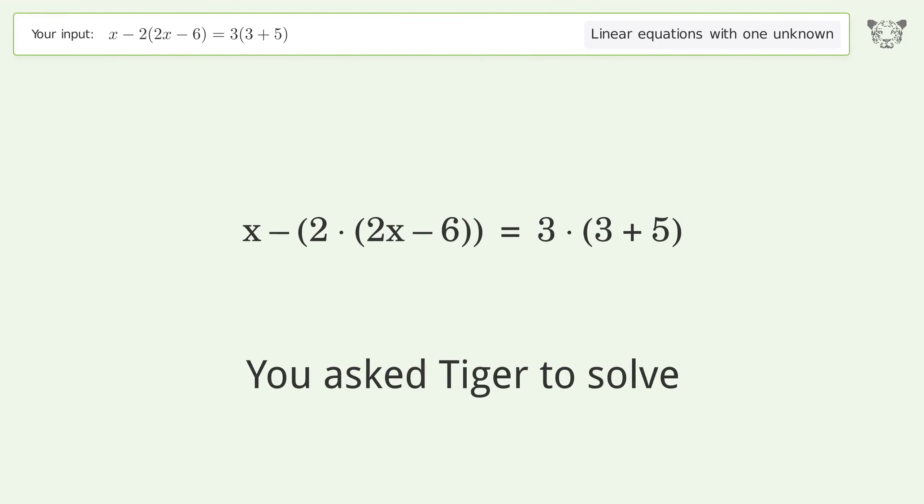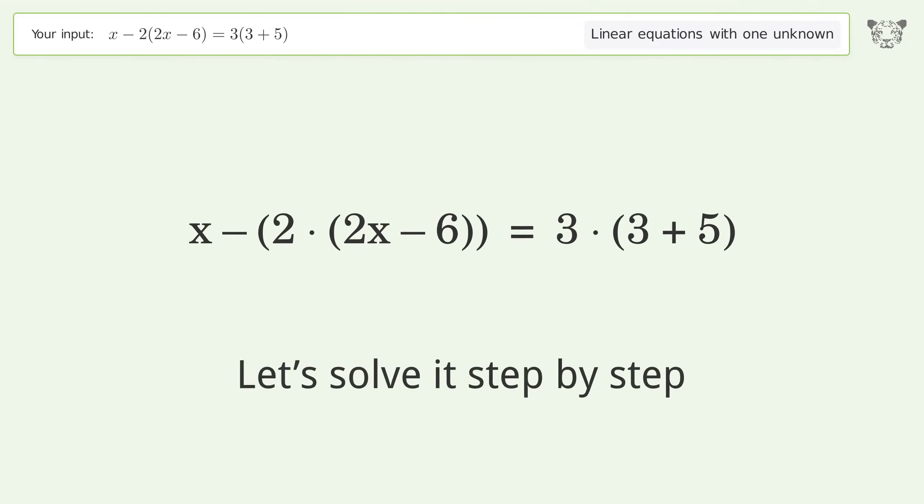You asked Tiger to solve this. It deals with linear equations with one unknown. The final result is x equals negative 4. Let's solve it step by step.